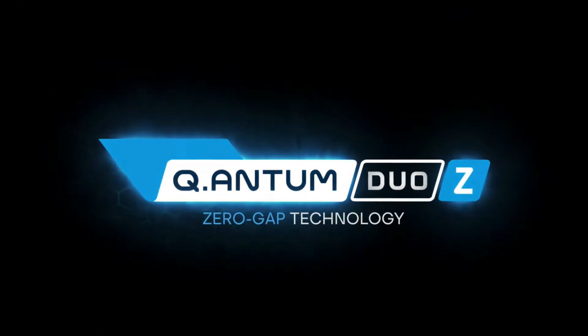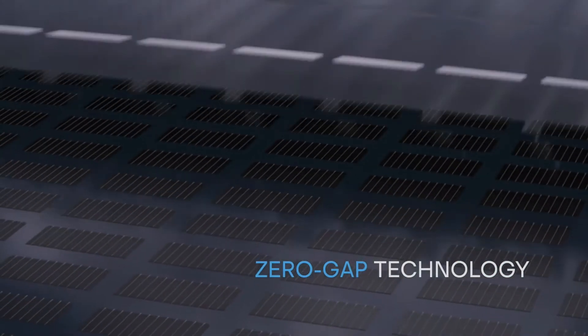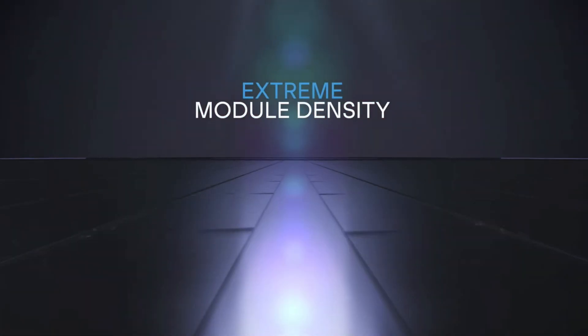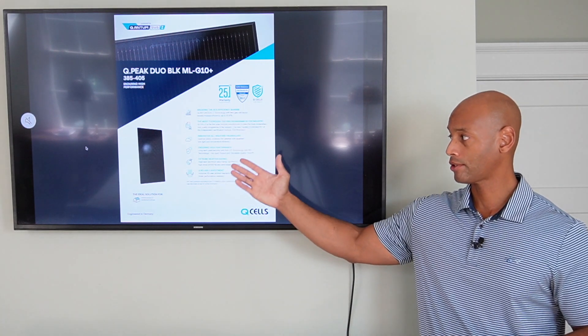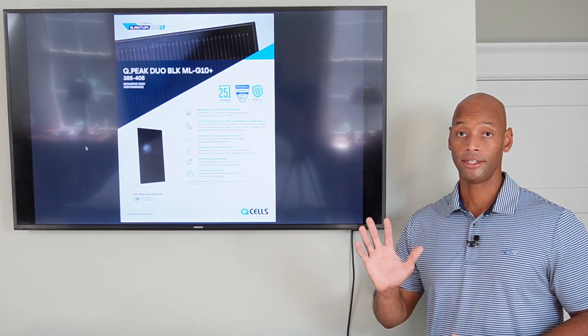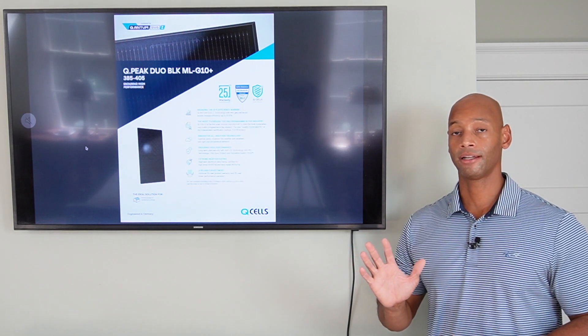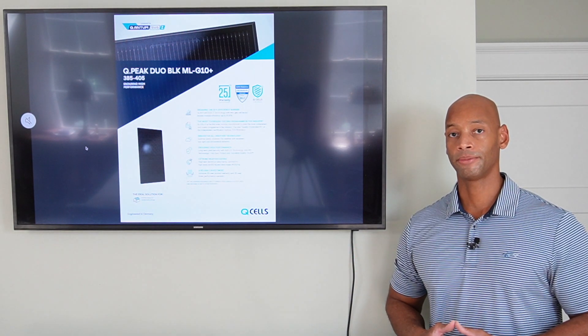But the new generation 10 Q-cells panel also includes what they call Duo-Z technology, or zero-gap technology. And what that means is that they've pretty much been able to eliminate all of the white space between the individual solar cells. So virtually the entire surface of the solar module is the solar cell that's going to be capturing and converting sunlight into usable electricity.